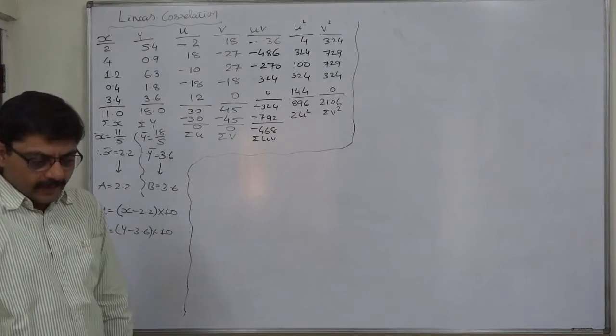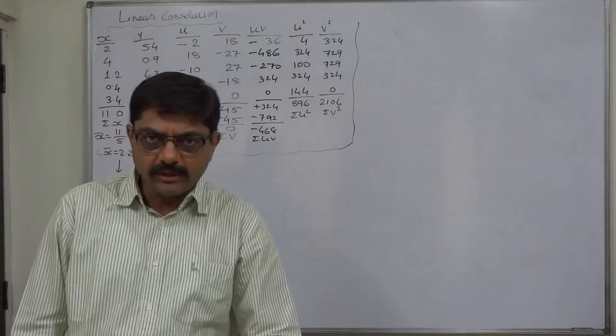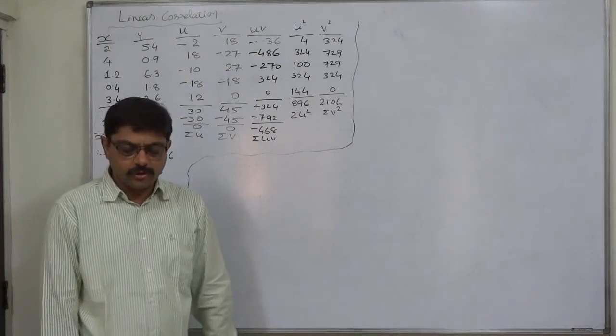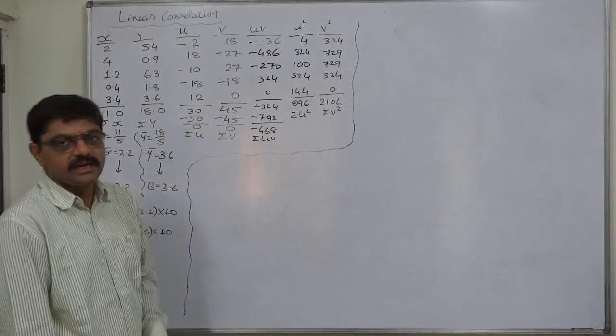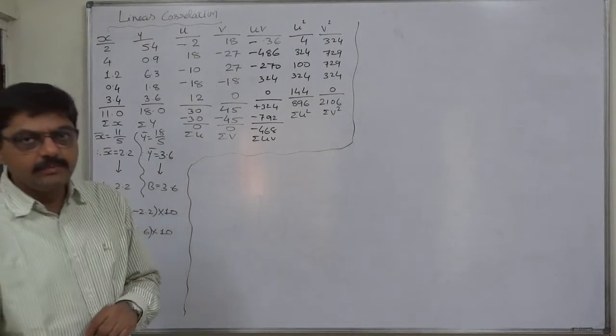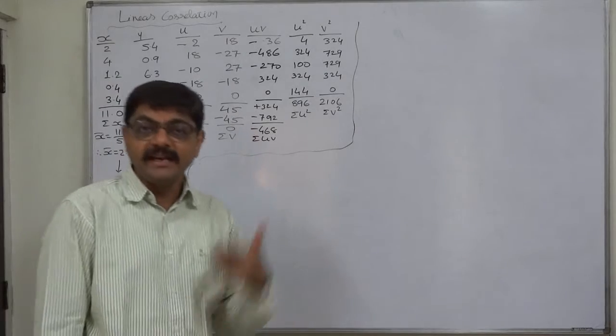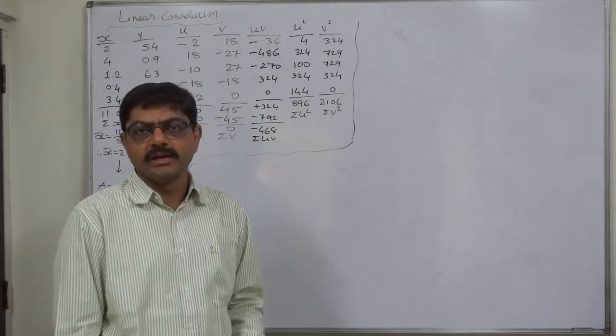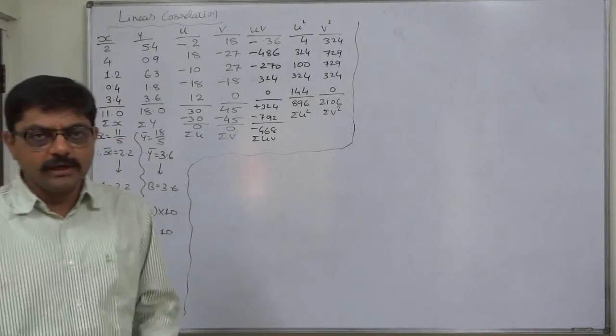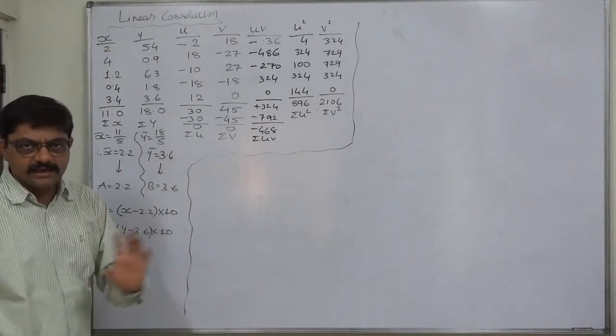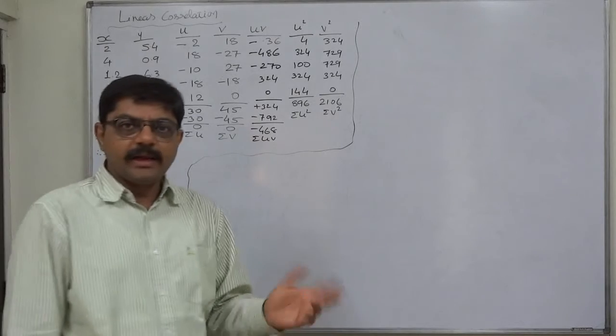We know that the important characteristic of coefficient of correlation is that the coefficient of correlation is independent of change of origin and scale. That means there will be no effect on the final answer of coefficient of correlation if we add or subtract any constant value to or from the original data, and if we multiply or divide the original data by any constant value.